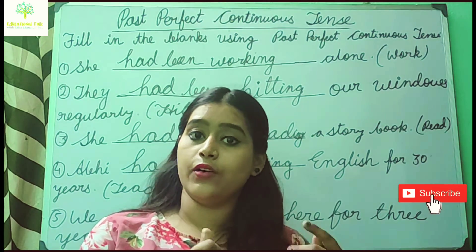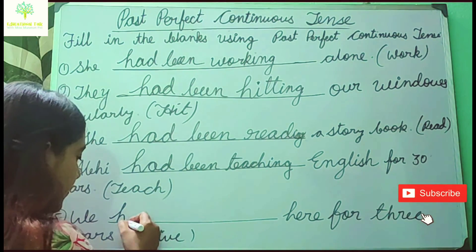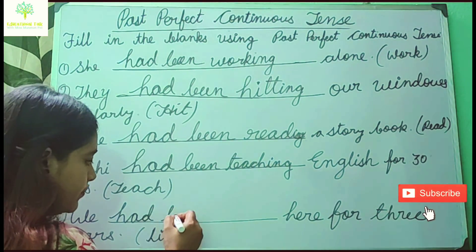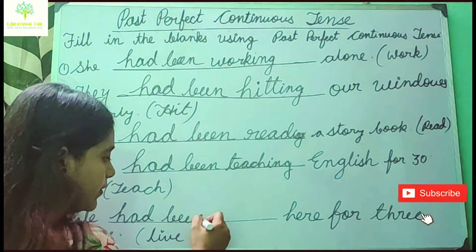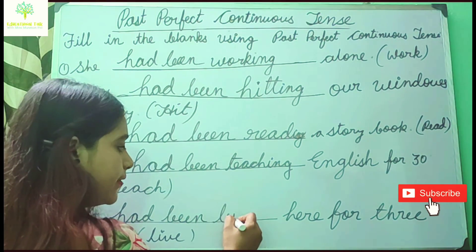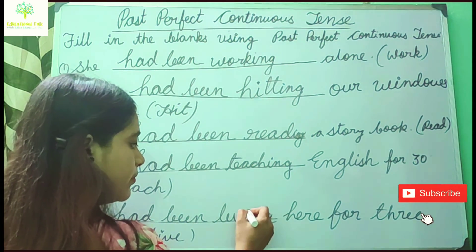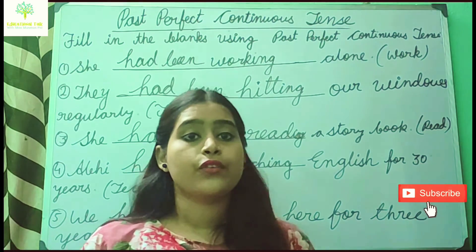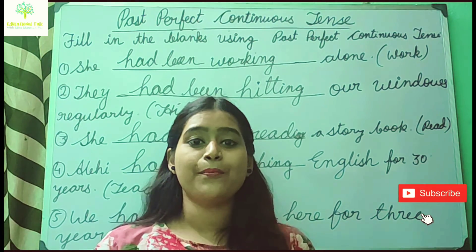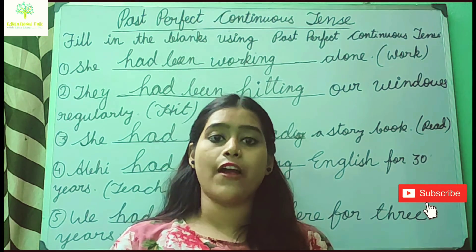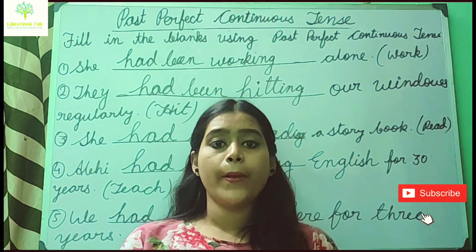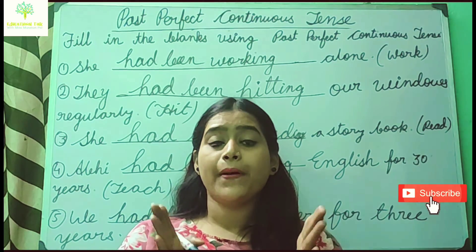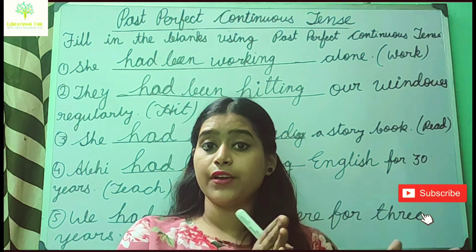Next: 'We ___ here for three years.' The answer is: 'We had been living here for three years.' So these are examples of past perfect continuous tense. Remember the rules — when to use it and how to form sentences.